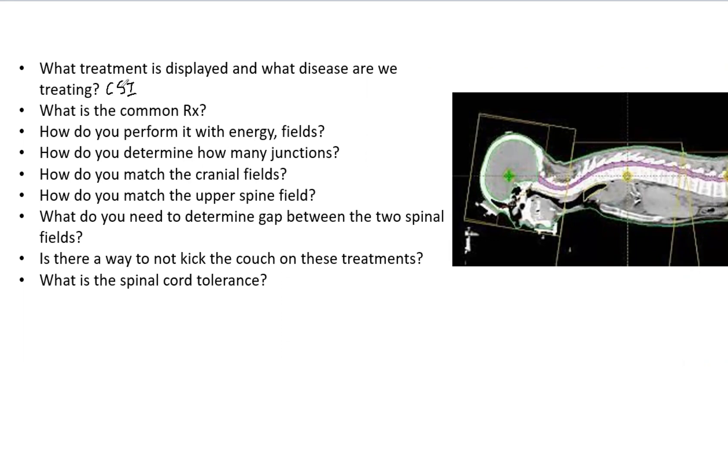Common prescriptions: after resection of the primary disease, we go to 36 Gy to the brain and spinal cord in 20 fractions. Sometimes they add that, and then we also boost the bed for a total of 54 Gy.